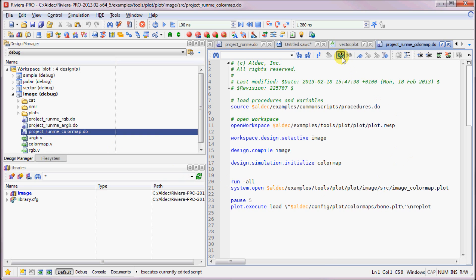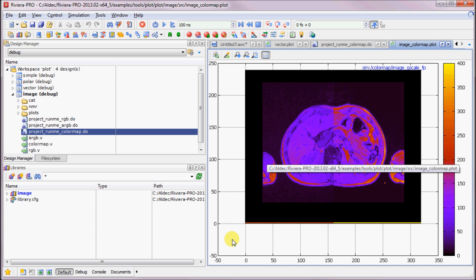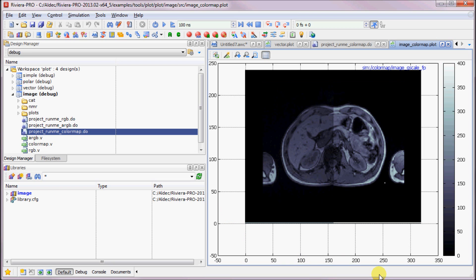The fourth type of plot is the image plot. Here are some examples of it. The first one is a color map of a CT scan. Here you can see the color map. And now the grayscale image.